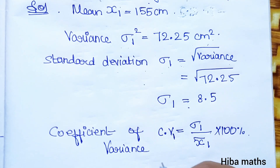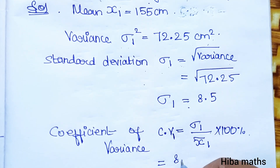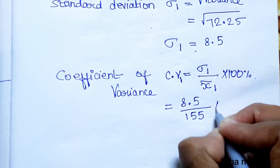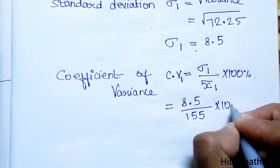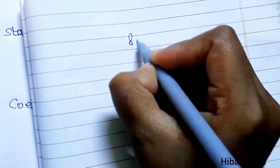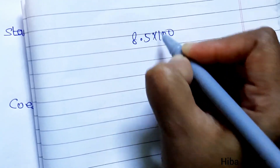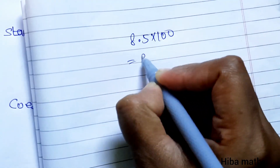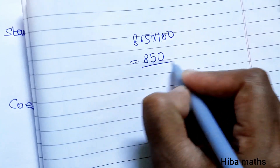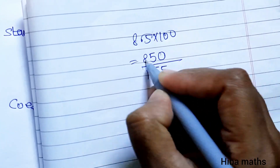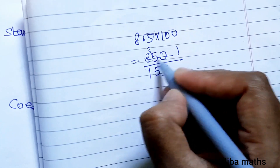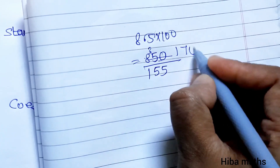Now, Coefficient of Variance CV1 = (standard deviation / mean) × 100. So CV1 = (8.5 / 155) × 100. We compute 8.5 × 100 = 850, then divide by 155.